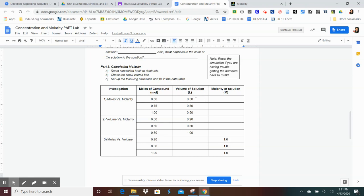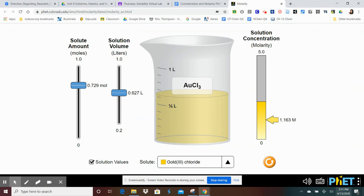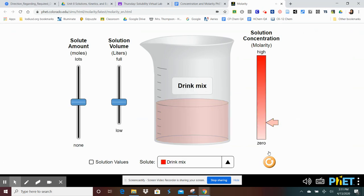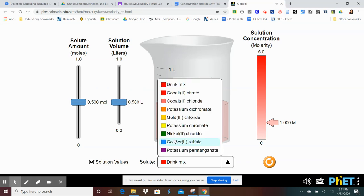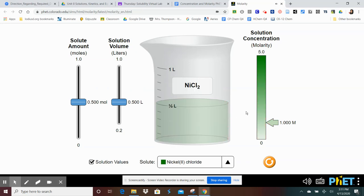You can also take them back to the 0.50 by clicking on the reset button. And then again, go back to solution values, change the solution, and then make any changes that you need. You cannot move this bar here. You can only move these so that it turns into the molarity that you want.